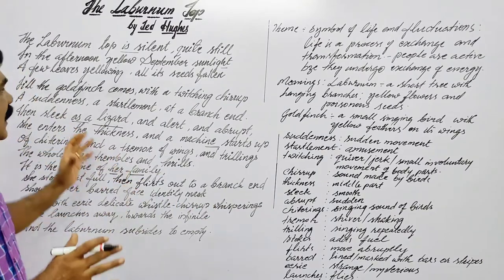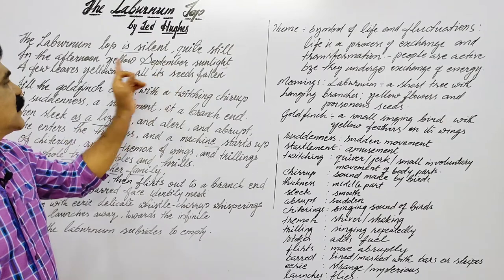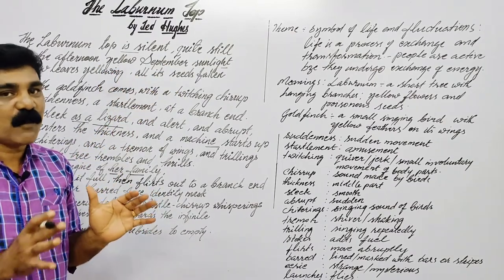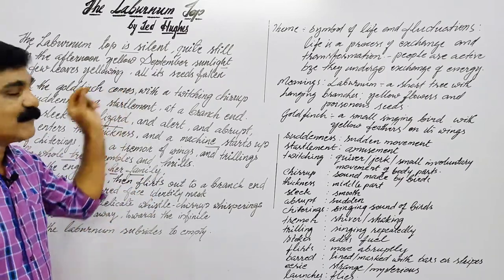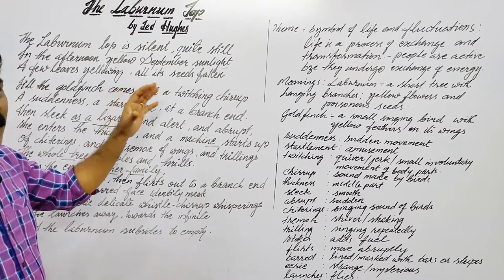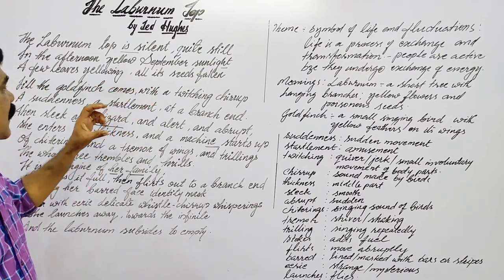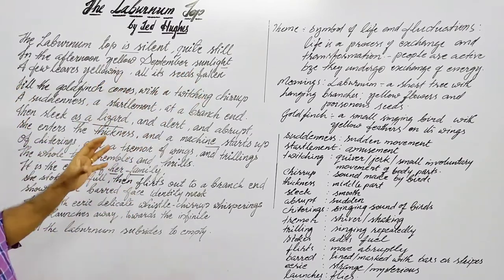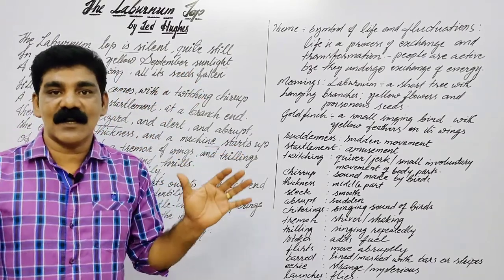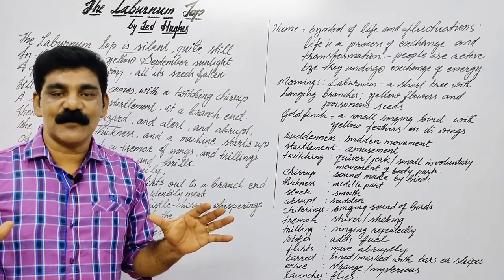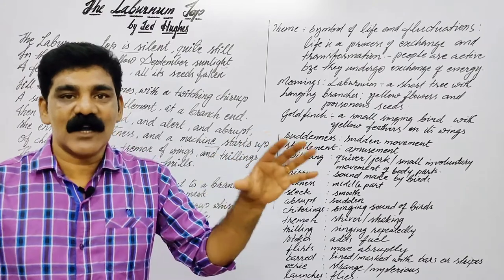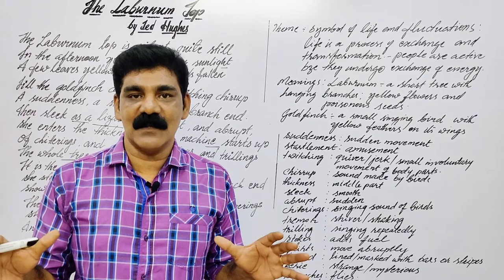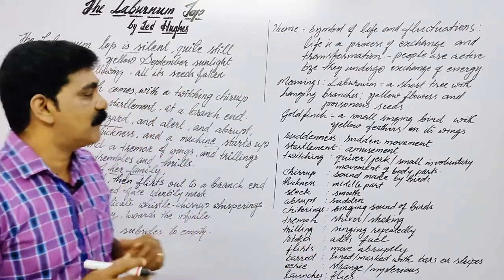When does it happen? It happens in a September afternoon. The poet looks at the tree in a September afternoon and it looks very calm and quiet, without any movement. In the sunlight, it looks yellow in color — the afternoon sunlight spreads yellow color everywhere, and the tree is surrounded by yellow-colored light.